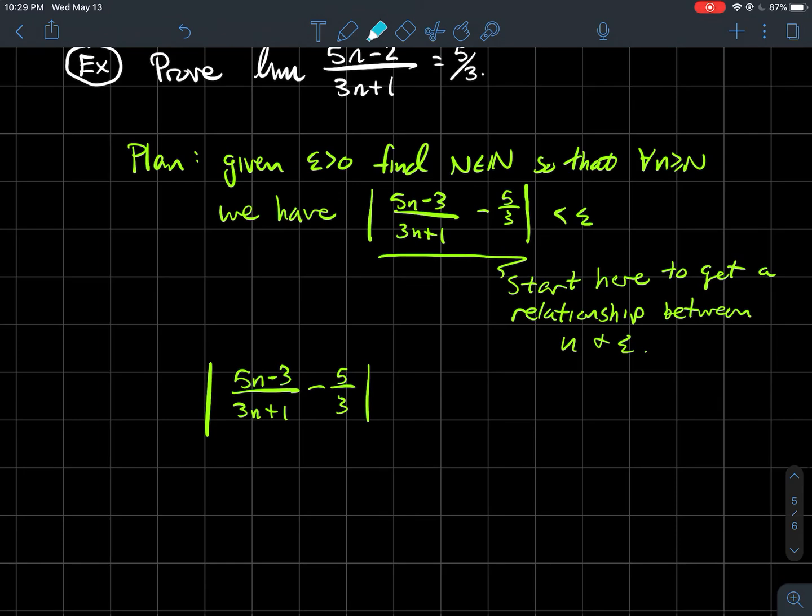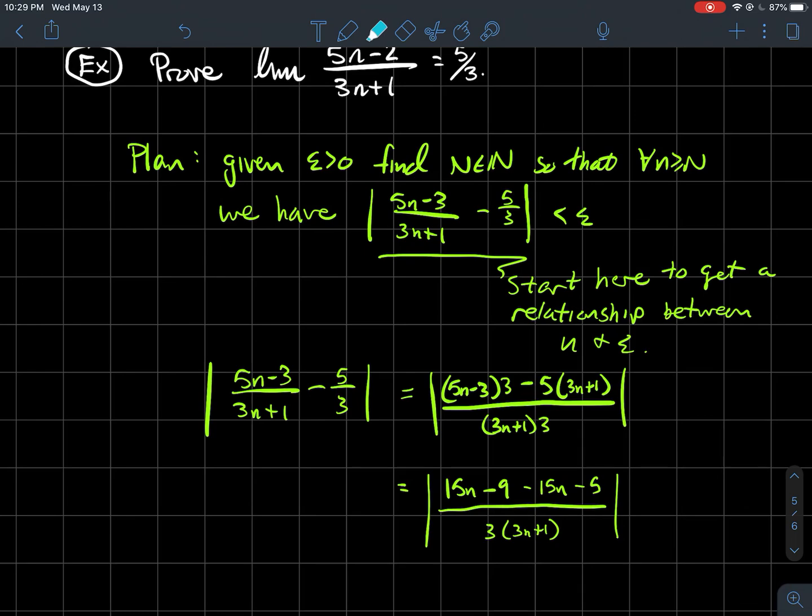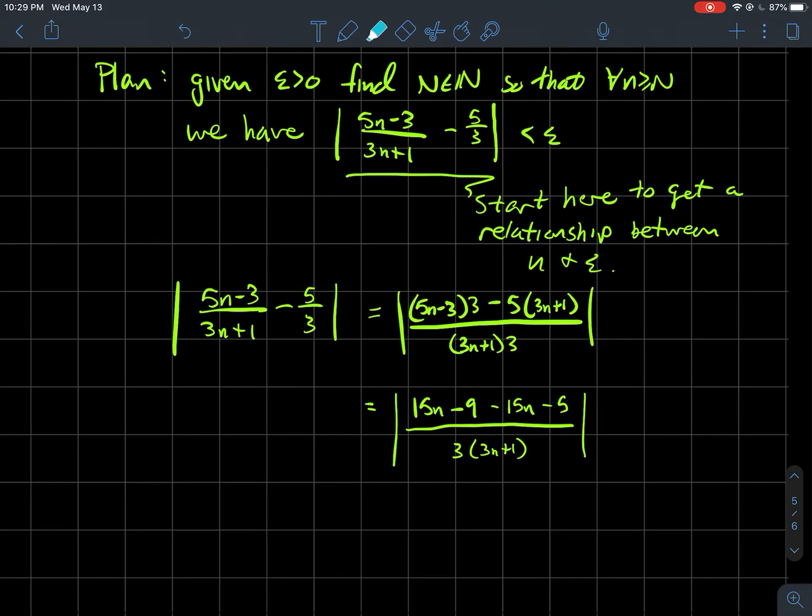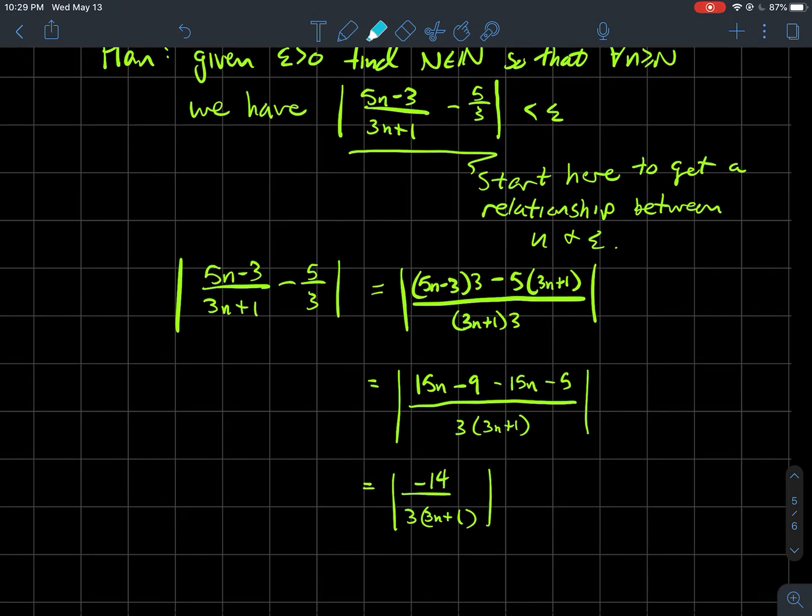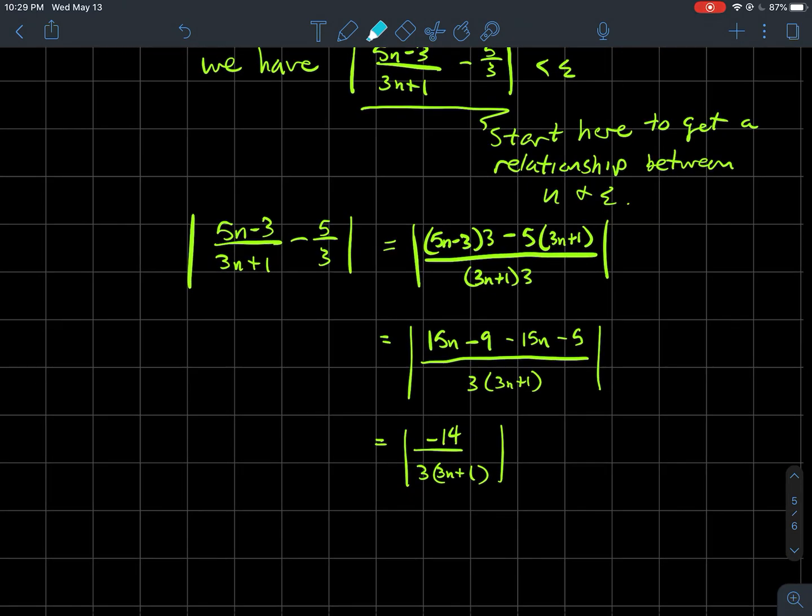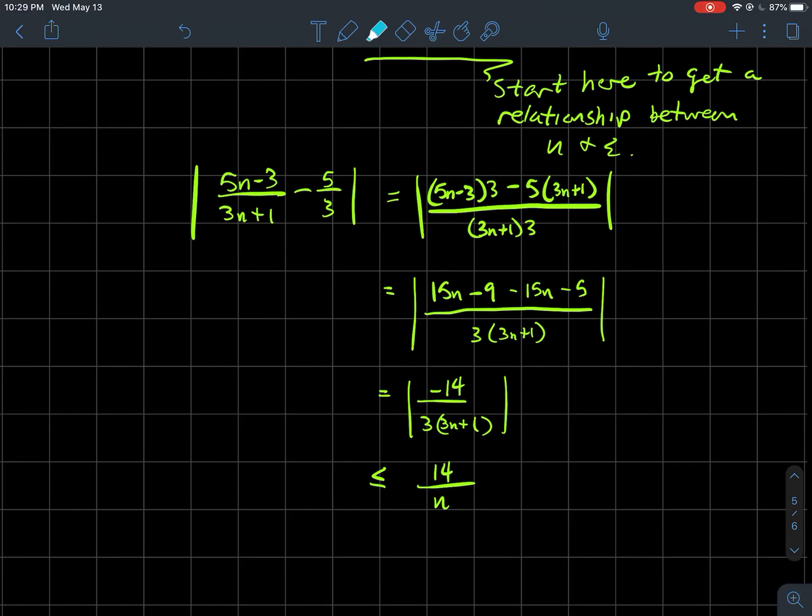When I write that out, I should get a common denominator and simplify. Doing the algebra, you get -14 at the top divided by 3 times (3n+1). In the next step, take the absolute value—we can drop the negative on 14.